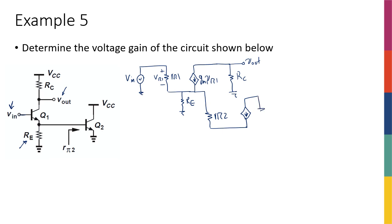This collector is connected to ground, and I have GM2, Vpi2, and here I have ground, because the emitter of Q2 is connected to ground. And that's my small signal model.